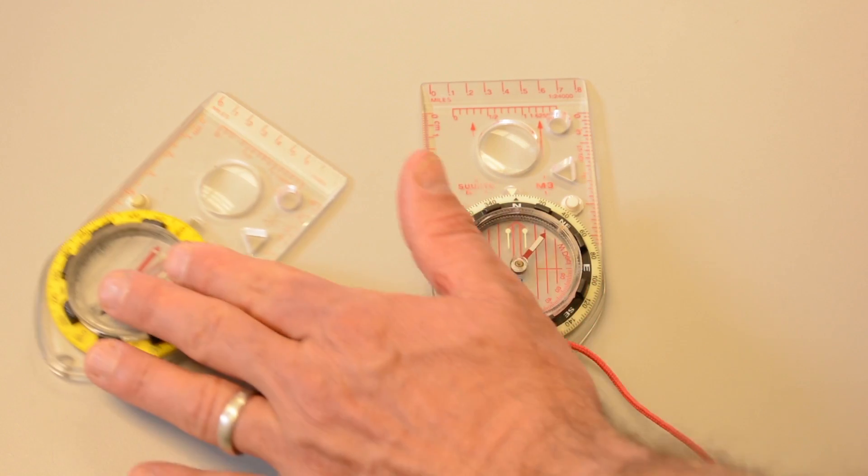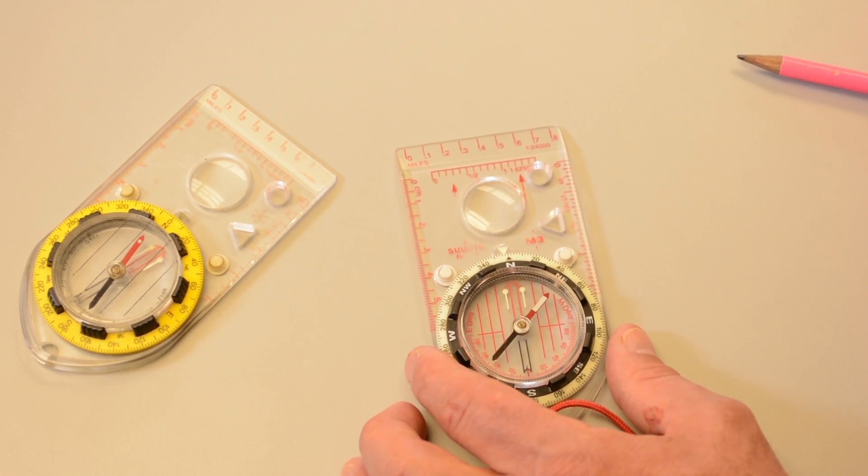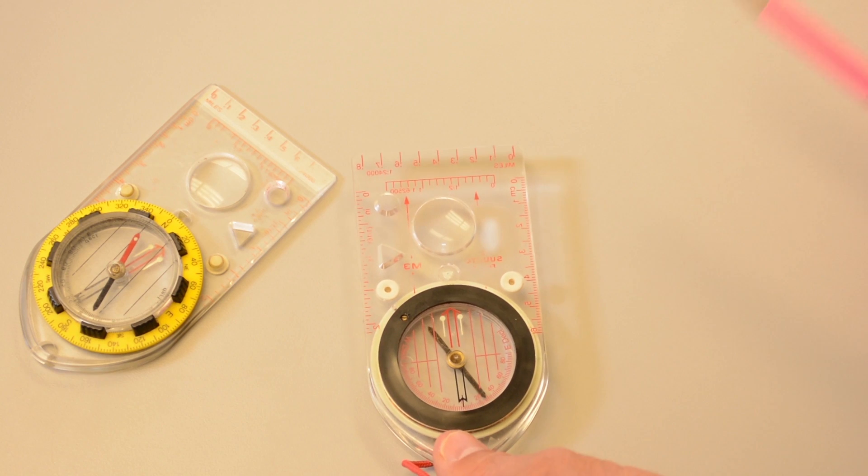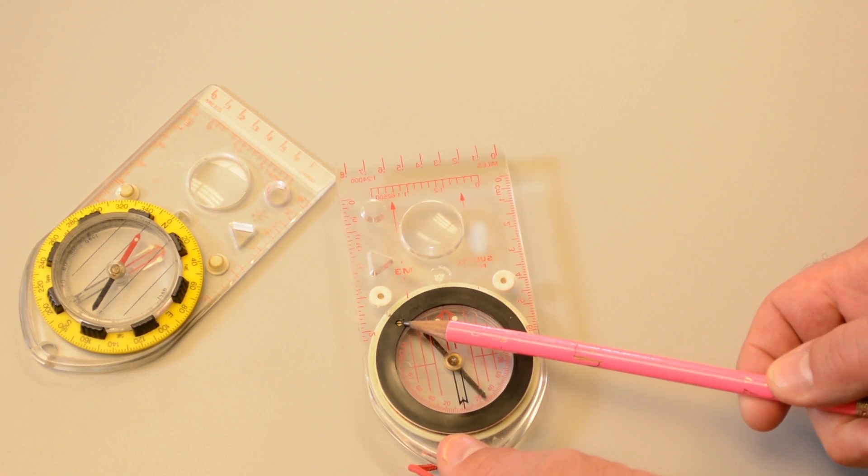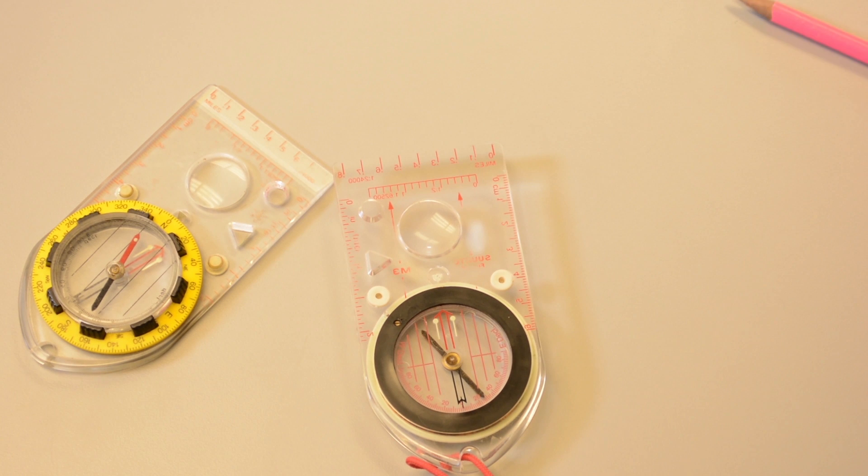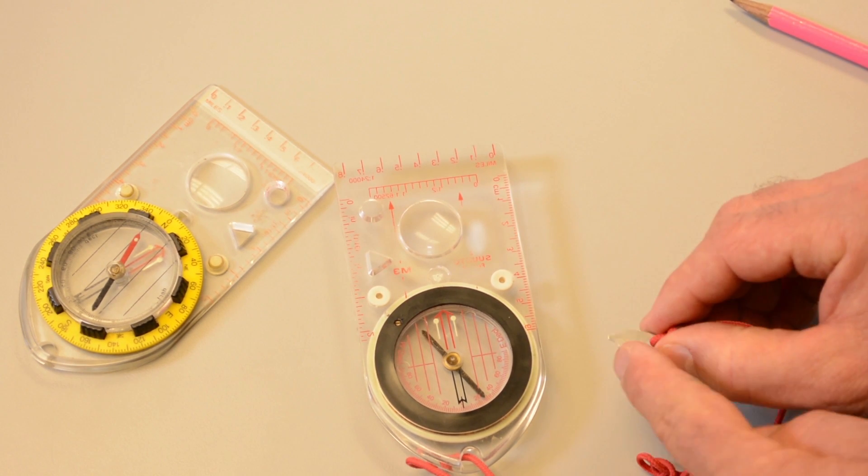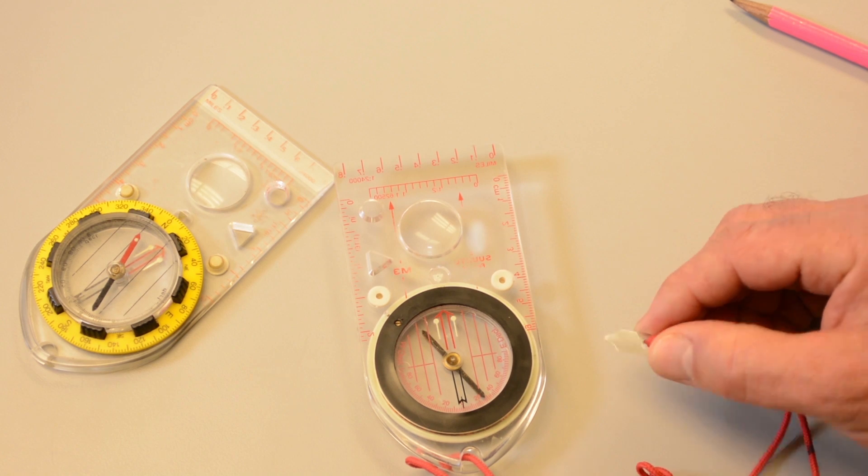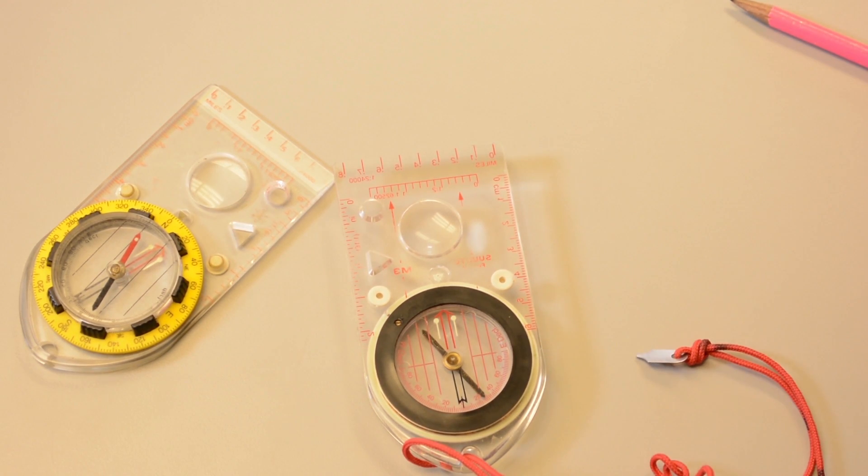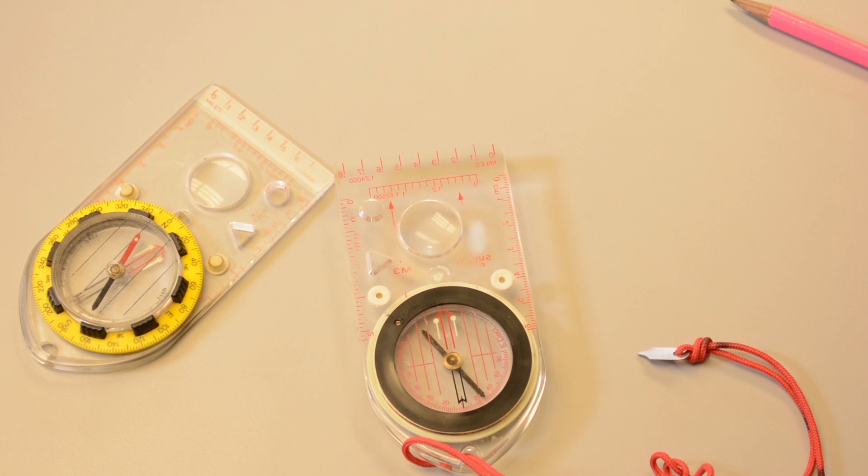Say I wanted to adjust this newer compass to the local declination in Oregon of 16 degrees east. If I turn the compass over, you can see a tiny screw here on the underside of the base plate. Turning this screw moves the orienteering arrow and this adjusts the declination. This compass comes with a tiny screwdriver here that's on the lanyard and we use this to turn the screw. If you don't have the screwdriver, the tip of a small knife blade works as well.